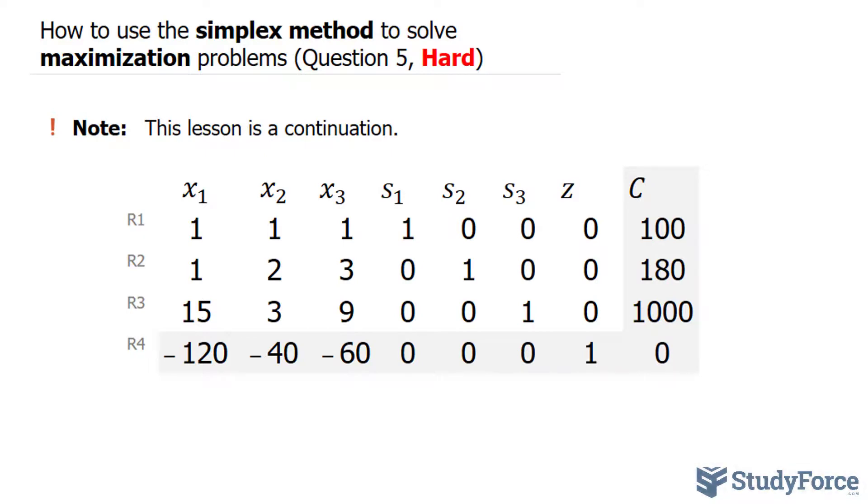Also, when you set up your initial simplex tableau, you always want your objective function to be at the bottom and your constants, which we've labeled this column C, on the far right.